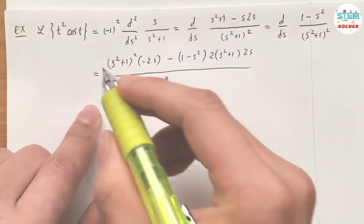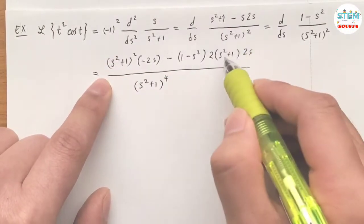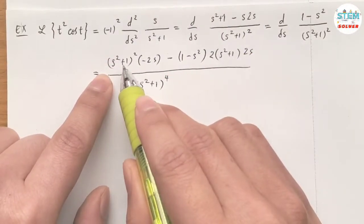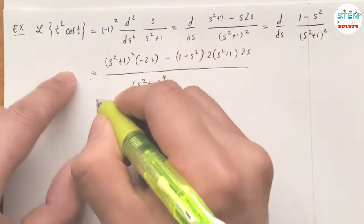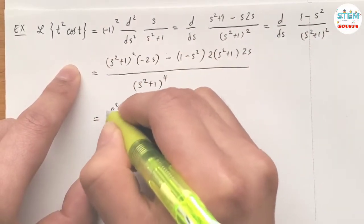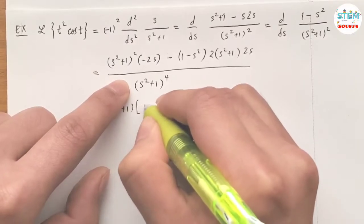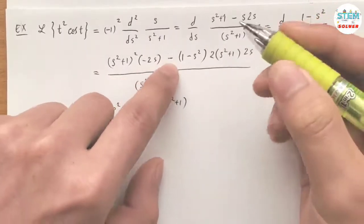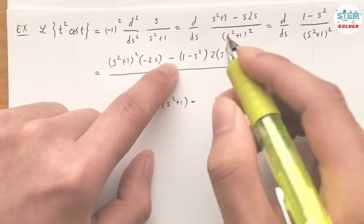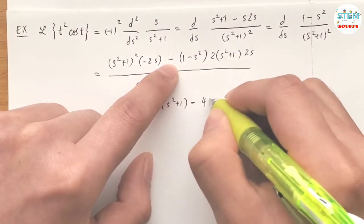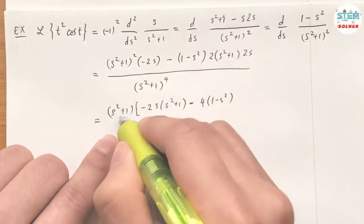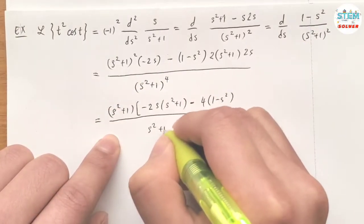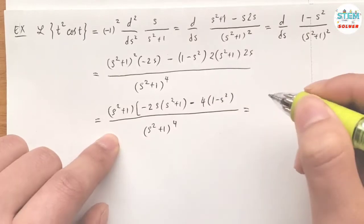Now simplify this. We have (s²+1)². I'm going to factor out 2. What I have left is -2s(s²+1) minus 4(1-s²) all over (s²+1)⁴. Now simplify it. (s²+1) on top and bottom cancel out, so we're left with (s²+1)³ on the bottom.